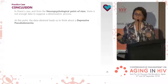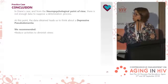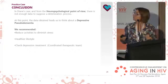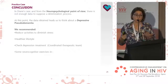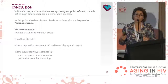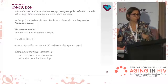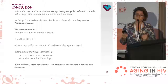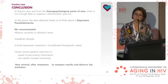Our recommendations include: reduce activities to diminish stress, maintain a healthy lifestyle, check and adjust depression treatment — always coordinating with the therapeutic team — and implement a neurocognitive program to work on speed of processing information and nonverbal complex reasoning, as well as maintaining the preserved and complex but preserved capabilities. A new control assessment is recommended after treatment to compare results and observe evolution, perhaps six months later.